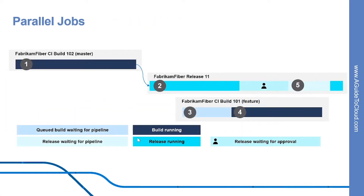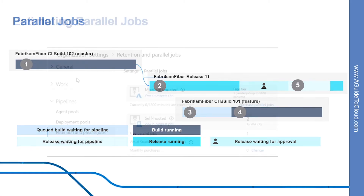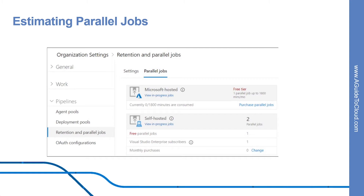Let's look into parallel jobs. Consider an organization that has only one Microsoft hosted parallel job. This allows users in that organization to collectively run only one build or release job at a time. When additional jobs are triggered, they are queued and will wait for the previous job to finish. A release consumes a parallel job only when it has been actively deployed to a stage. While the release is waiting for an approval or a manual intervention, it does not consume a parallel job.